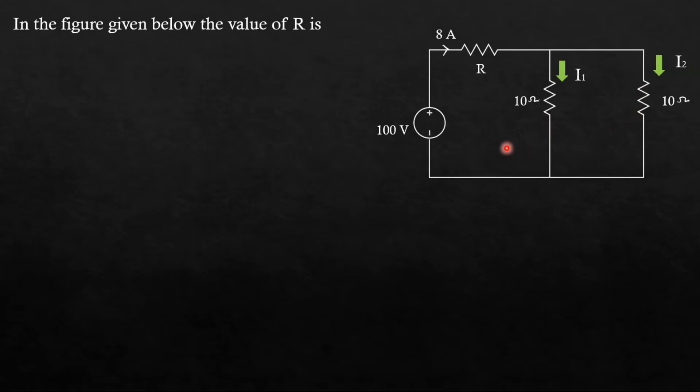From the current division rule, I can find the value of current I1 because we know the total current. I1 equals the total current I times R2 divided by R1 plus R2. Let us say this one is R1 and this is R2. Now put the values: total current is 8, value of R2 is 10 ohm, and the sum is 10 plus 10, that will come out to be 4A.